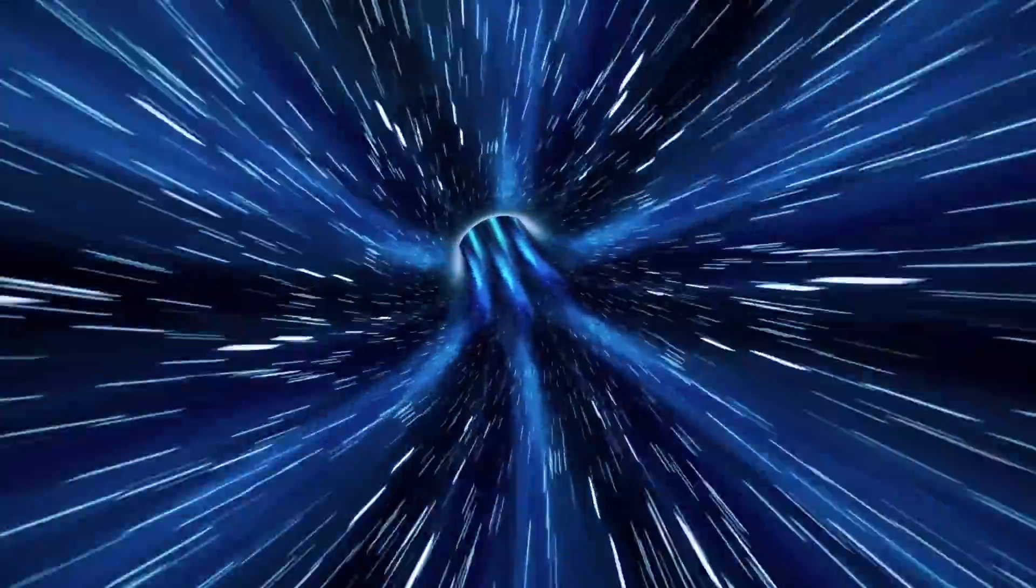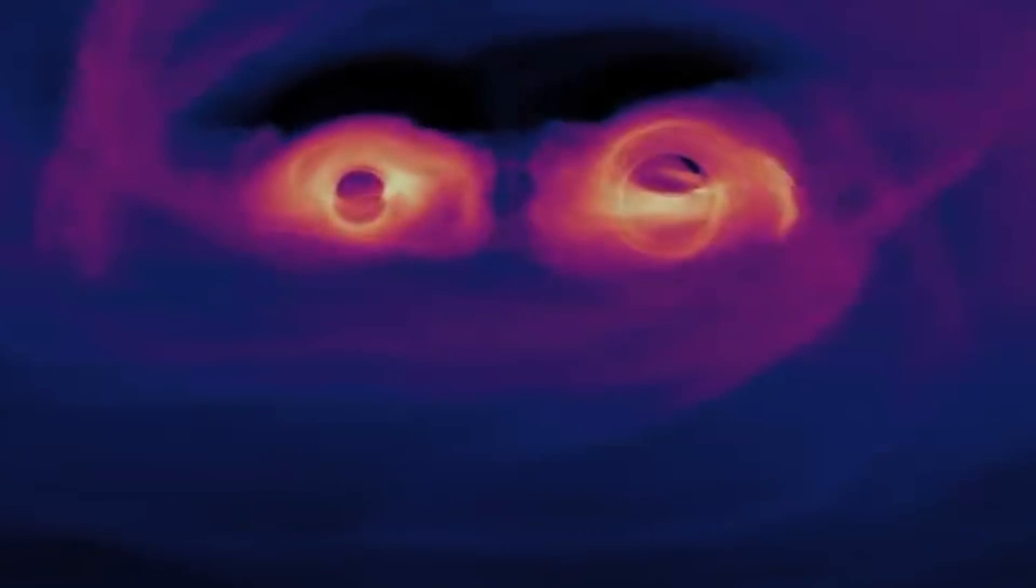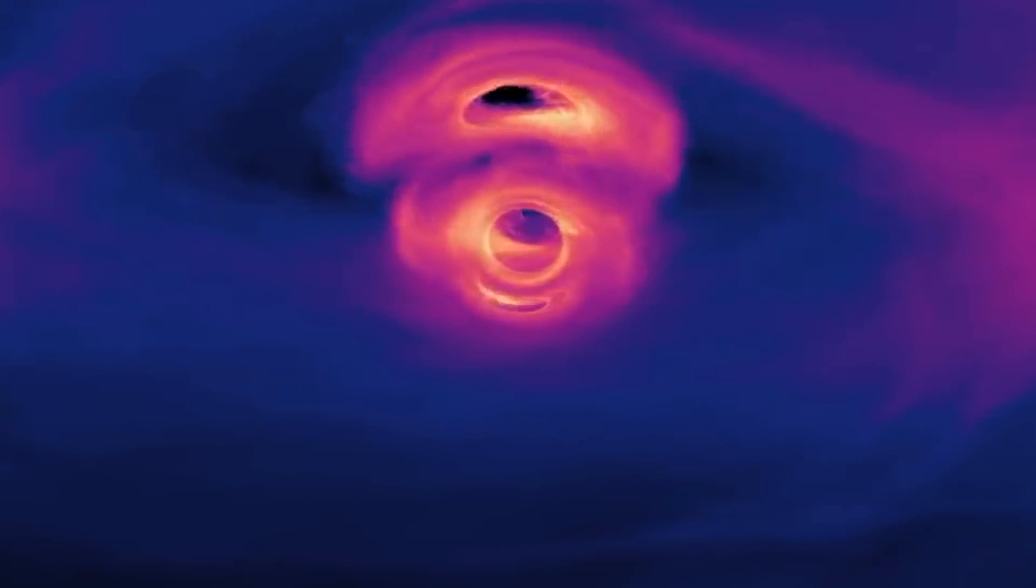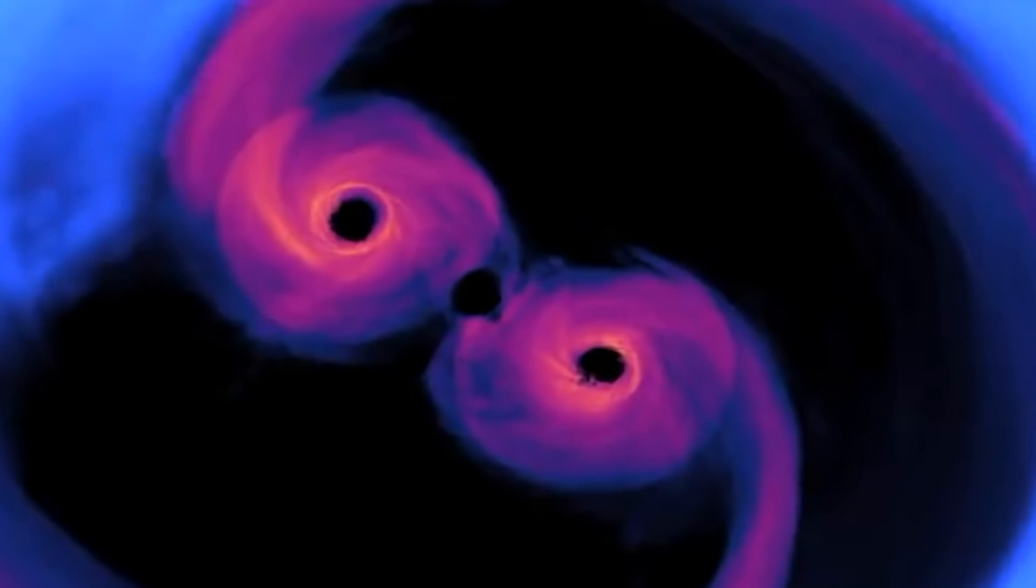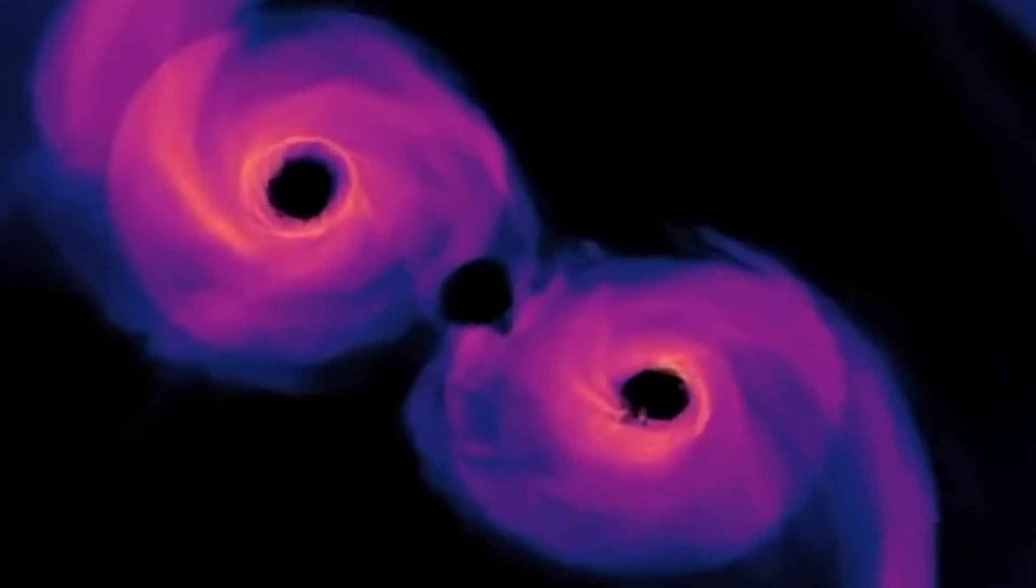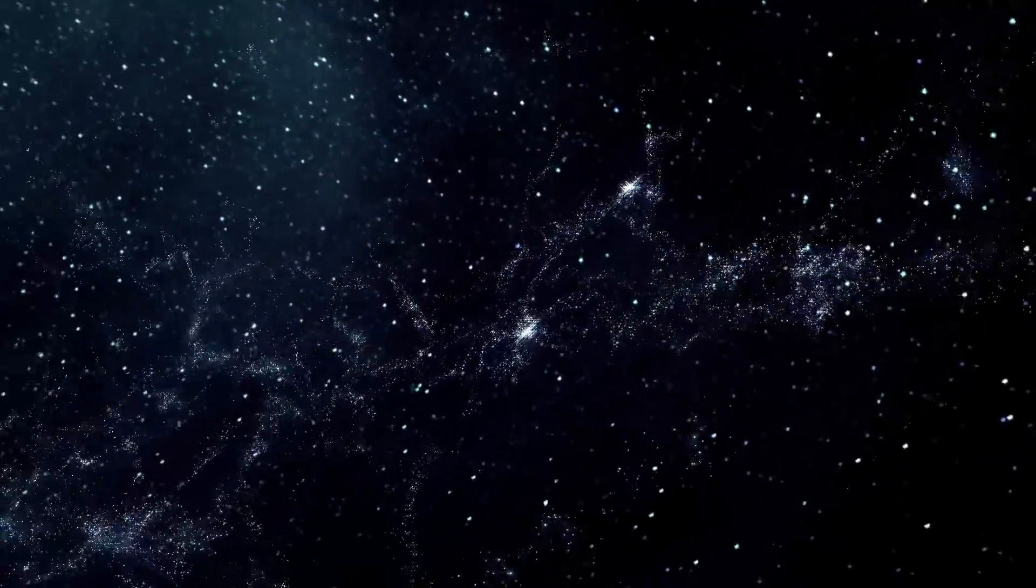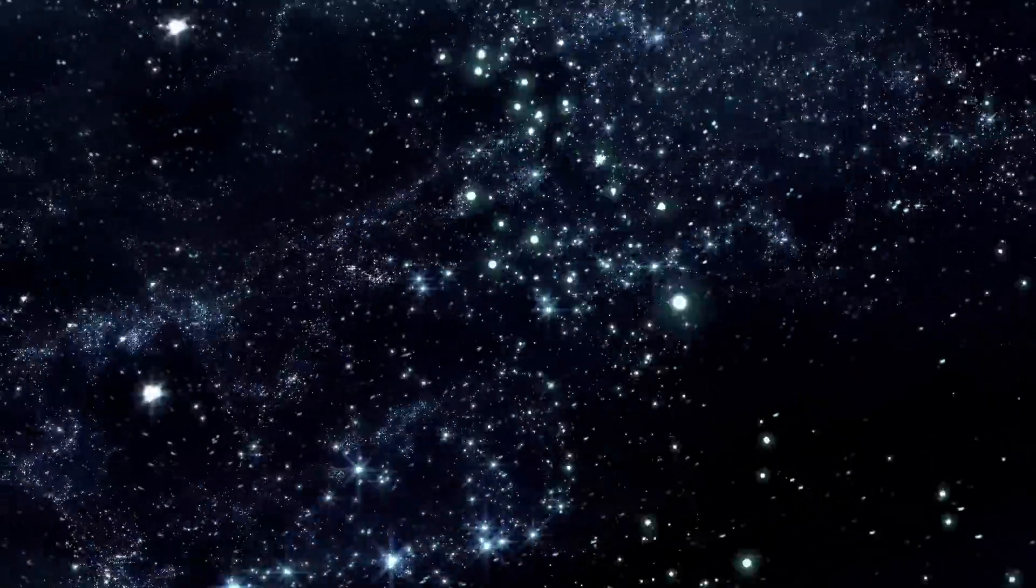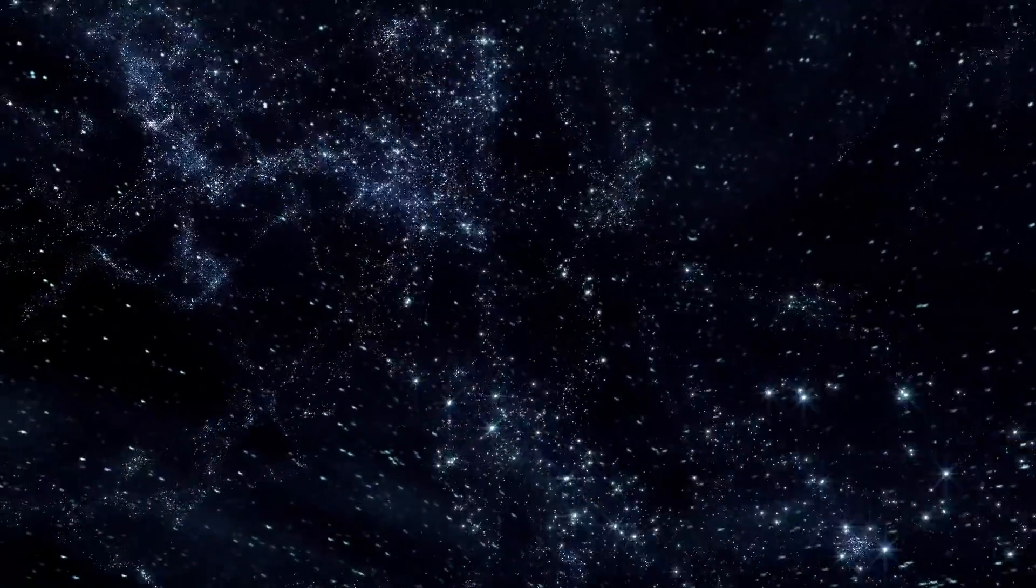Another theory says that a wormhole could be formed at the end of such a collision. These are again purely hypothetical structures that are supposed to be able to connect two distant places in the universe as a kind of portal. It could therefore be possible that the matter of the white hole that lands in a black hole will eventually reappear in a completely different area of the universe.